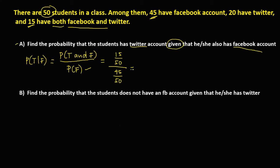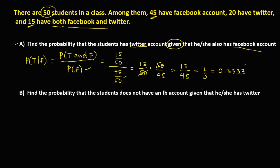To simplify, we have 15 over 50 times the reciprocal of 45 over 50, which is 50 over 45. We can cancel the 50s, giving us 15 over 45, which reduces to 1 over 3, or in decimal, 0.333. So this is the probability.